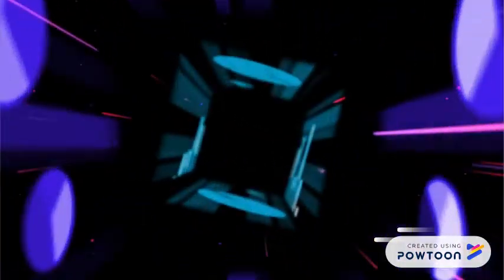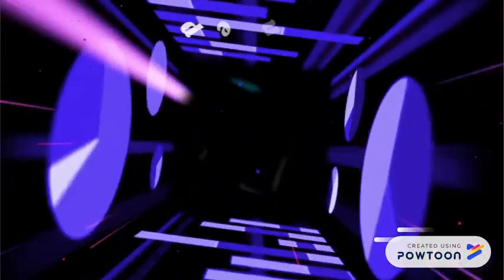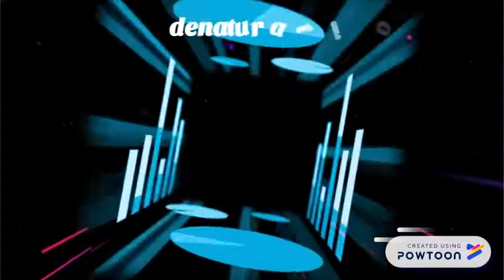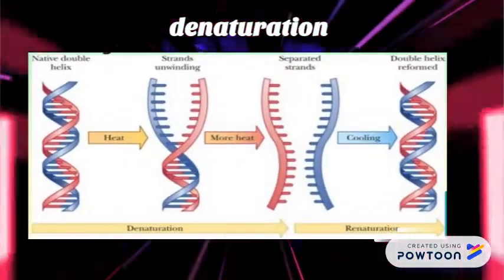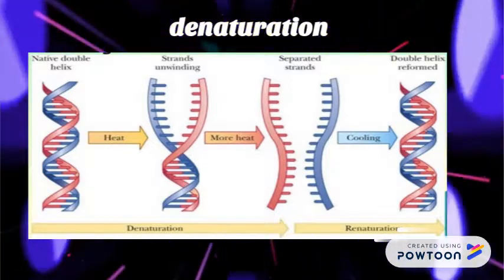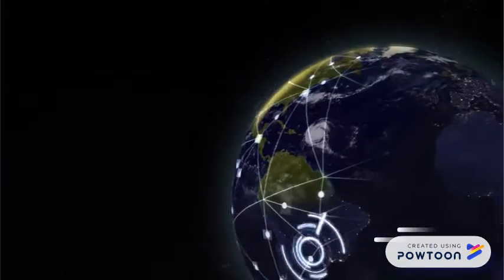PCR goes through multiple cycles of three main steps. Denaturation is the first step in the PCR reaction. The sample is heated at a high temperature between 94 and 98 degrees Celsius to separate the double-stranded DNA into single strands.